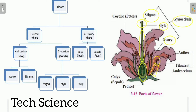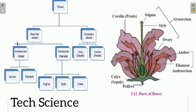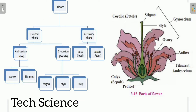In the diagram, the calyx — also called sepal — is the green part of the flower. The corolla, also called petals, is the colored part, which is generally used for attraction purposes. So androecium and gynoecium are the essential whorls, while calyx and corolla are the accessory whorls.